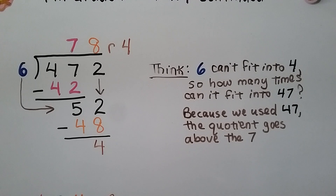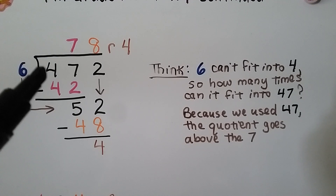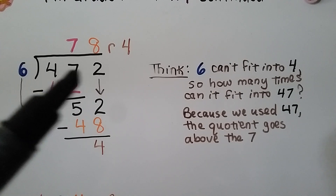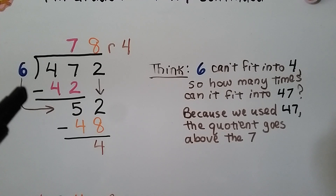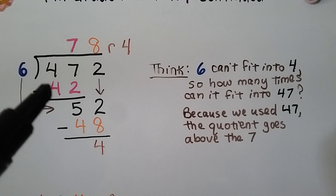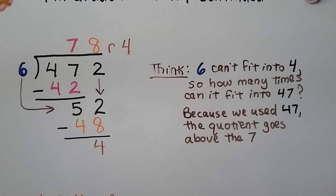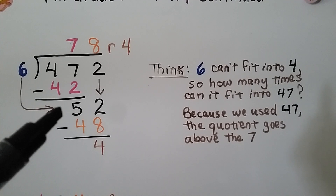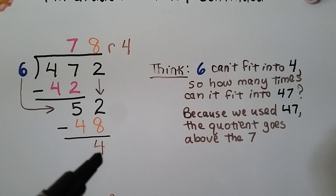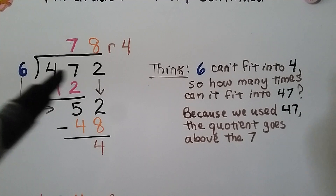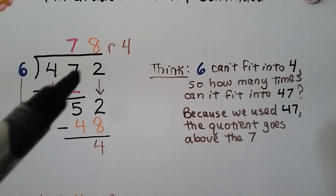Let's try another one, placing the first digit of the quotient. Here we have 472 divided by 6. We ask: can 6 fit into 4? No. So how many times can 6 fit into 47? I know 6 times 7 is 42, and 6 times 8 is 48 — that's too big — so we use 6 times 7. We write 42 here, subtract, and get a 5. Now it's the 2's turn to come down. How many times can 6 fit into 52? 6 times 8 is 48, and 6 times 9 is 54 — too big. So we use 8: 6 times 8 is 48. We subtract the 48 and get a 4. We have 78, remainder 4. If the divisor can't fit into the first digit, we try fitting it into the first two digits — so we'd be fitting 6 into 47 instead of just 4.